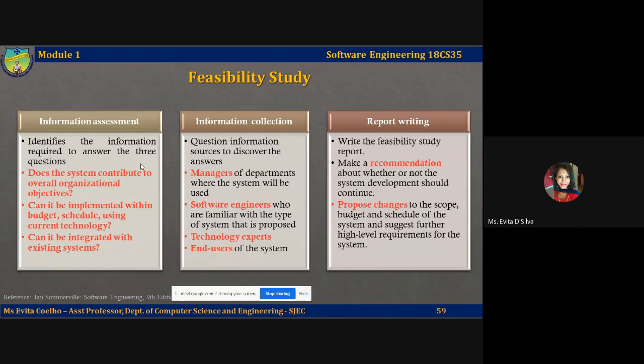Further information collection questions include: what are the problems with current processes and how would the new system help alleviate these problems; what direct contributions will the software system make to the business objectives; can information be transferred to and from other organizational systems; does the information require technology that has not been previously used; and what must or must not be supported by the system. Information sources may include managers of departments where the system will be used, software engineers familiar with these types of systems, technology experts, and end users. Normally you should try to complete the feasibility study in two or three weeks.